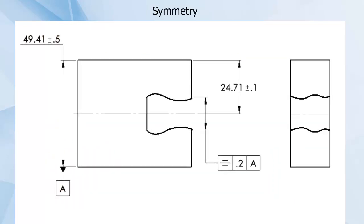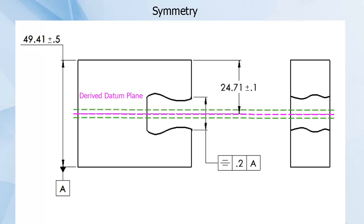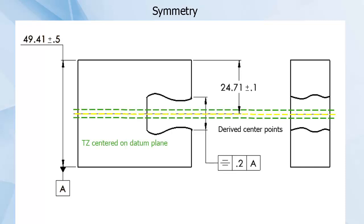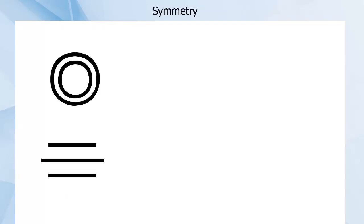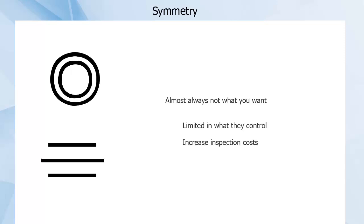Similarly, the symmetry control would also allow for symmetrically wavy cuts along either axis. Both of these strange cuts pass symmetry and cost much more to inspect, while simply controlling the position of the slot or the flatness of the two surfaces likely would have been cheaper and more effective. Like concentricity, symmetry is almost always not the control you want to use, due to limitations in what it's actually controlling and increased costs of inspection.